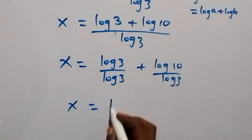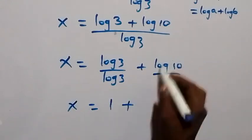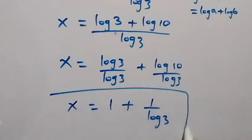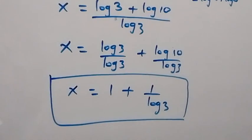So we have x equals to 1 plus, so log 10 here is 1, then over log 3. So here we have the solution to this problem: x equals to 1 plus 1 over log 3.